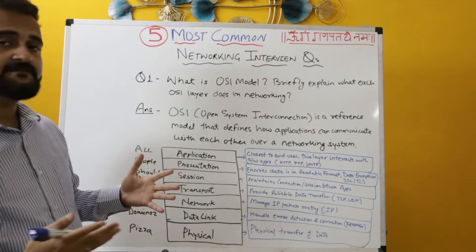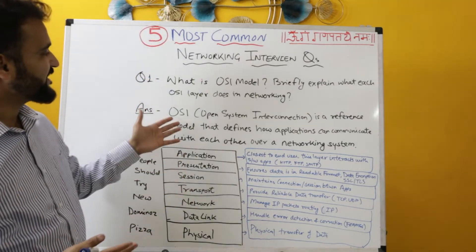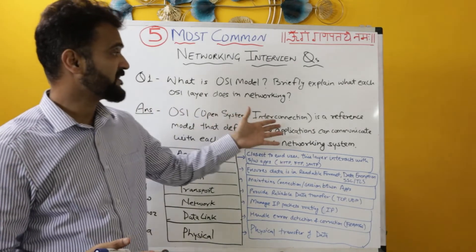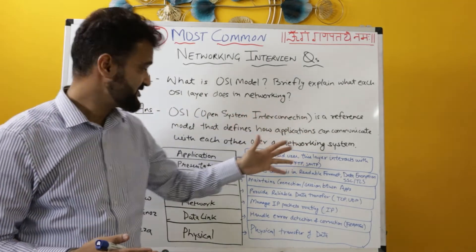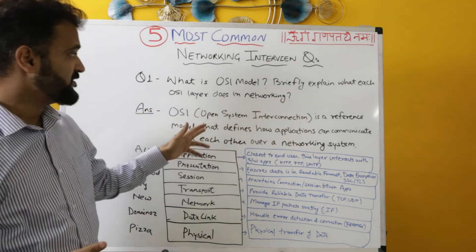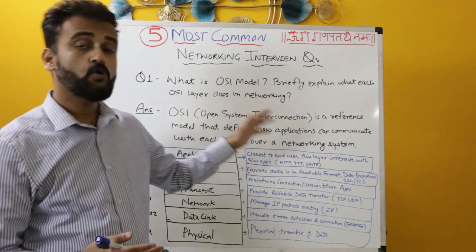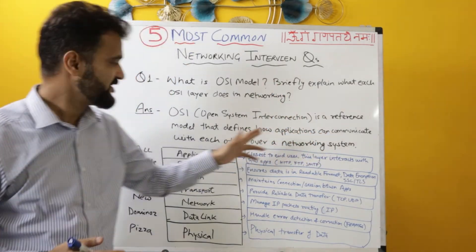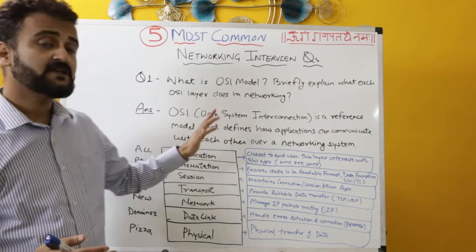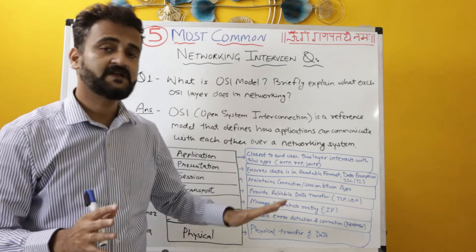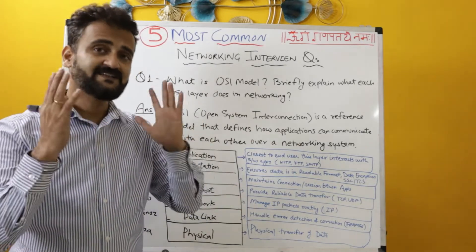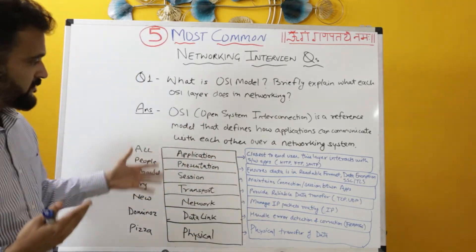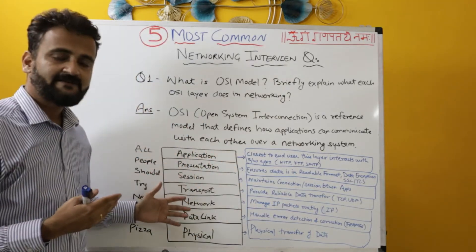The formal definition is: OSI, which is called Open System Interconnection, is a reference model that defines how applications can communicate with each other over a networking system. It is a reference model.